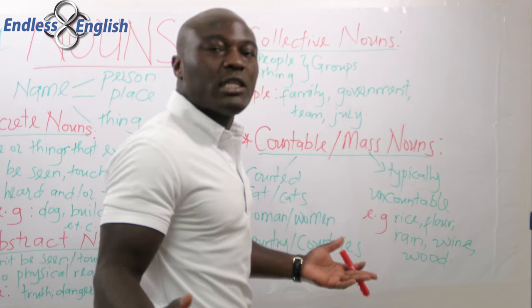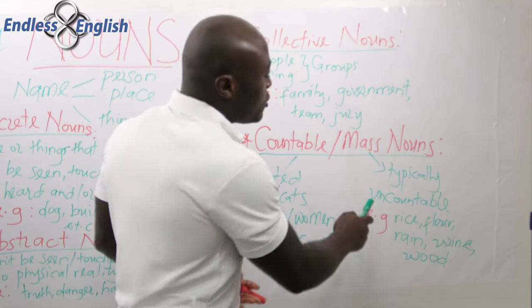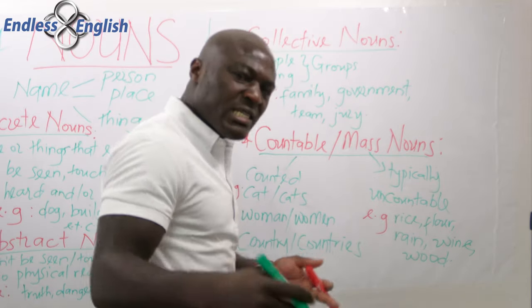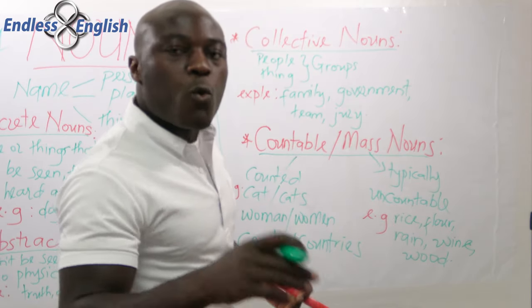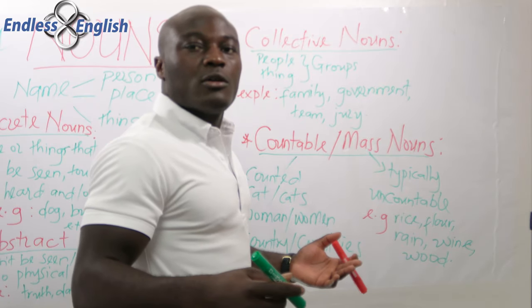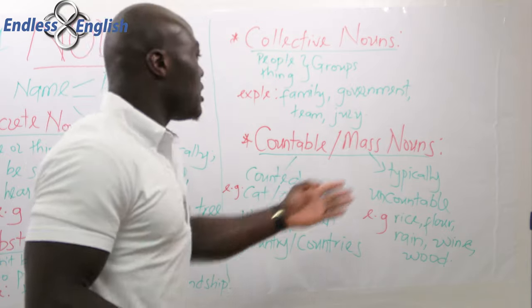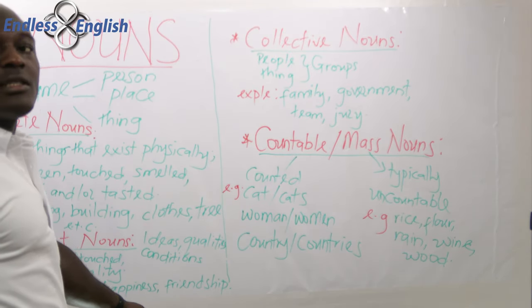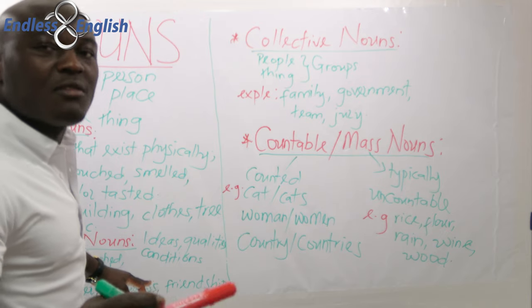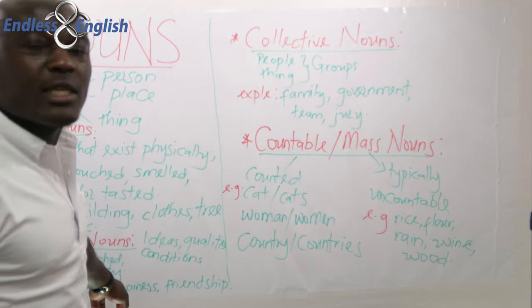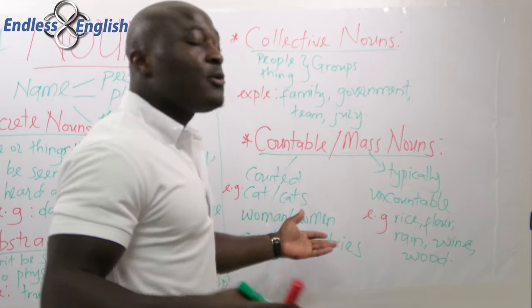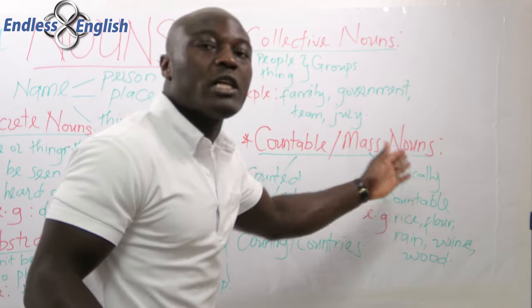Uncountable or mass nouns cannot be counted, so they don't have a singular or plural version. Examples are rice, flour, wine, rain, and wood — you cannot count these. Also, many abstract nouns fall under uncountable nouns because you cannot count happiness, danger, or truth. You cannot say 'two happiness' or 'three dangers' — that would be bad English. So abstract nouns like happiness, danger, truth, and friendship are mostly uncountable nouns.